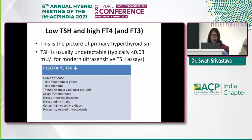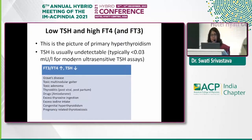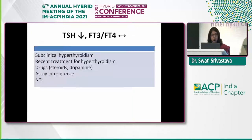Low TSH with high thyroid hormones is a very common pattern representing primary hyperthyroidism. Causes include Graves' disease, toxic multinodular goiter, toxic adenoma, thyroiditis, drugs such as amiodarone, excess thyroxine ingestion, excess iodine intake, congenital hyperthyroidism, and pregnancy-related thyrotoxicosis. This is a straightforward pattern that most clinicians can diagnose well.